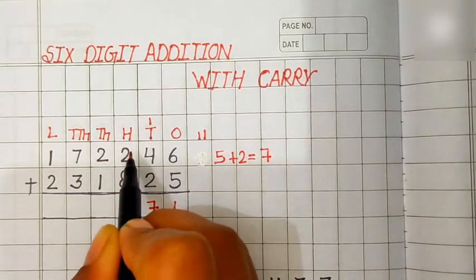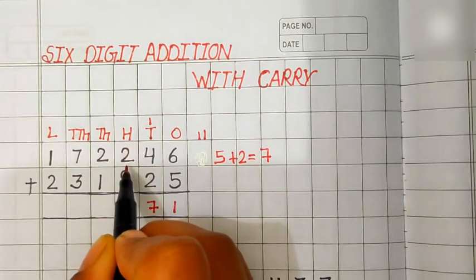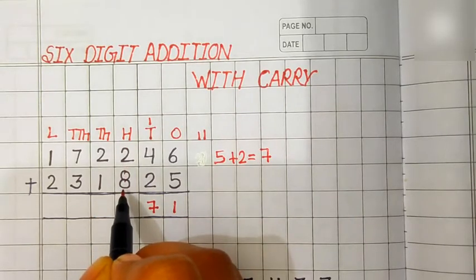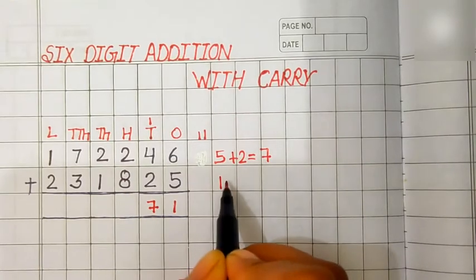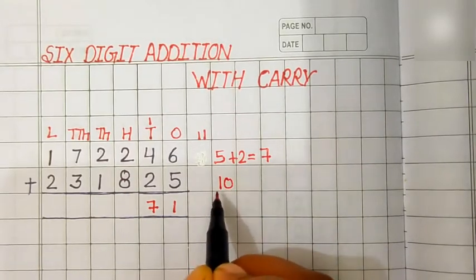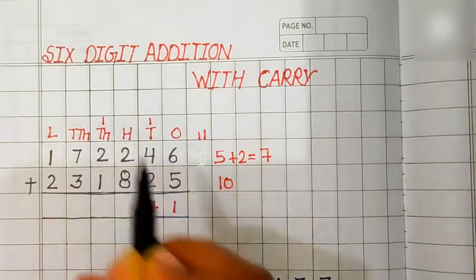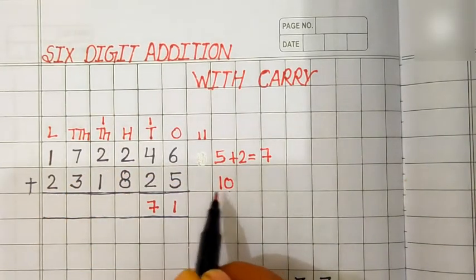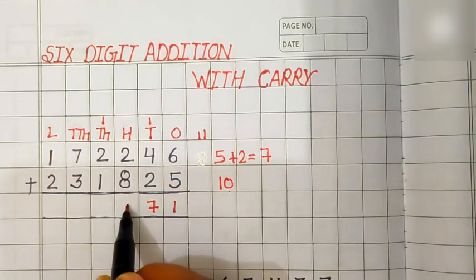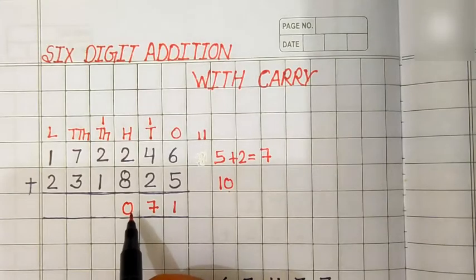Let's add the digit at 100 place. 2 plus 8 is equal to 10. 10 is a two-digit number. We will carry 1 to the 1000 place and 0 comes in the answer.